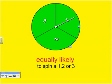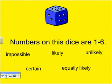It is equally likely on this spinner to spin a one, a two, or a three. They are divided into equal parts, and so it is equally likely that we will spin either one, two, or three.